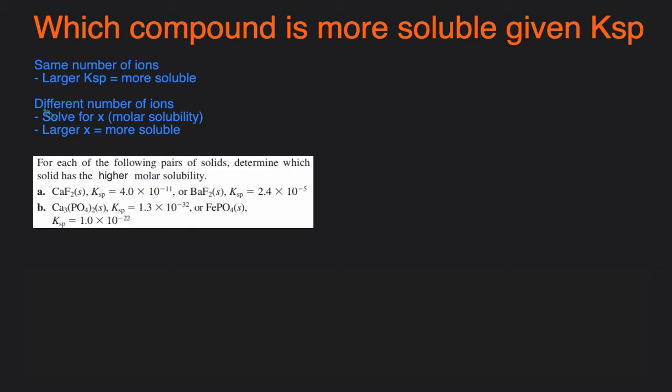In the second scenario, if the compounds dissolve to give different numbers of ions, then you're going to have to solve for X, which is the molar solubility. And then whichever compound has the larger X value is going to be more soluble. Alright, let's take a look at some examples to see how these rules are applied.